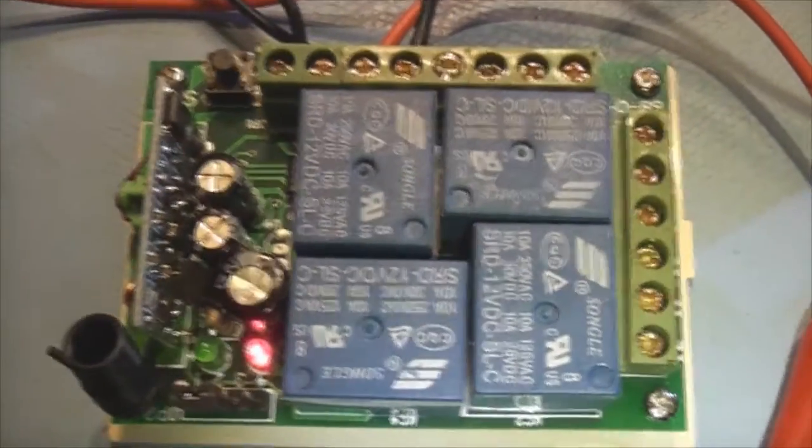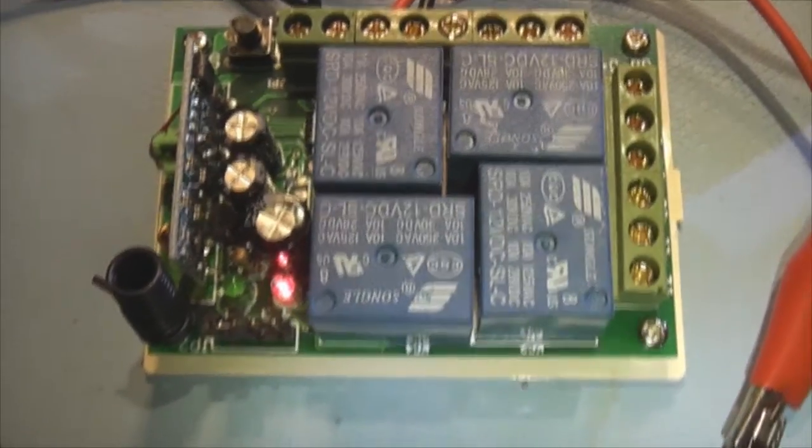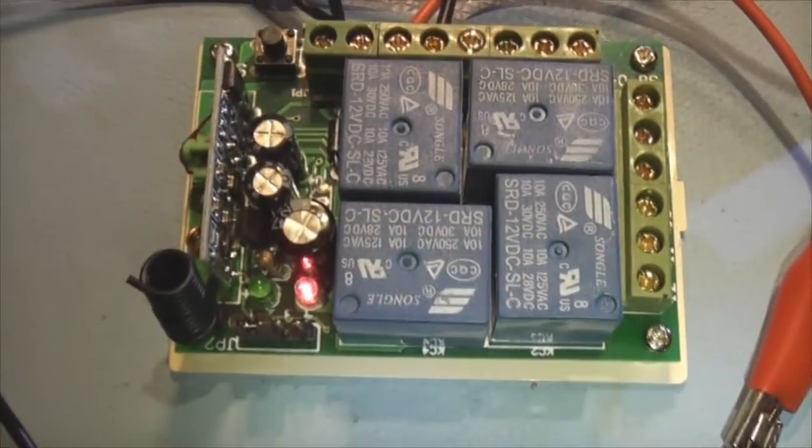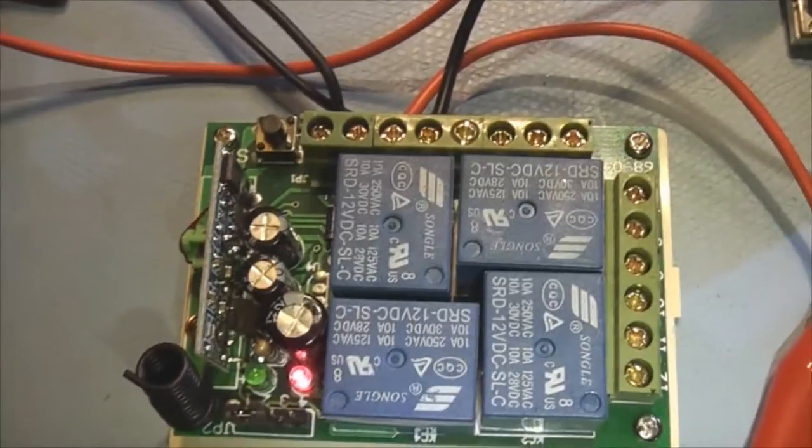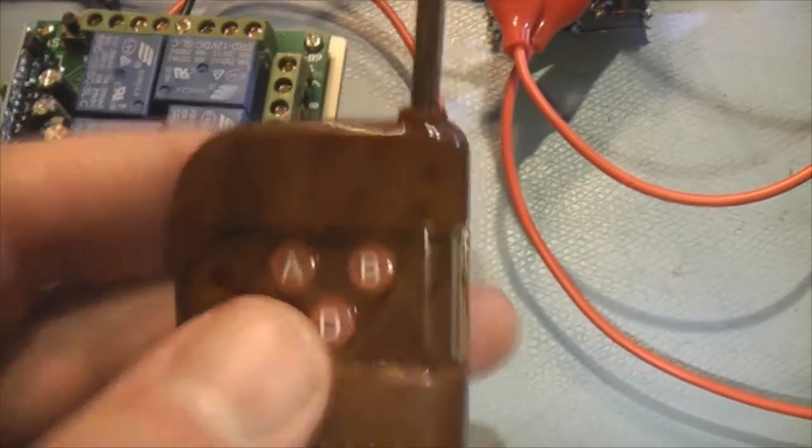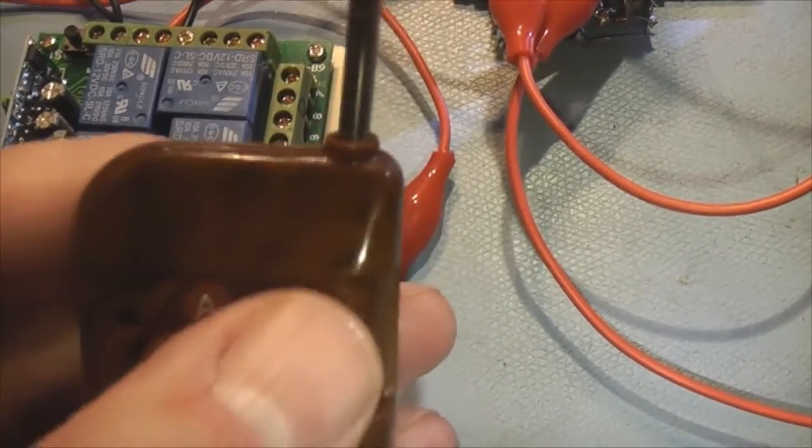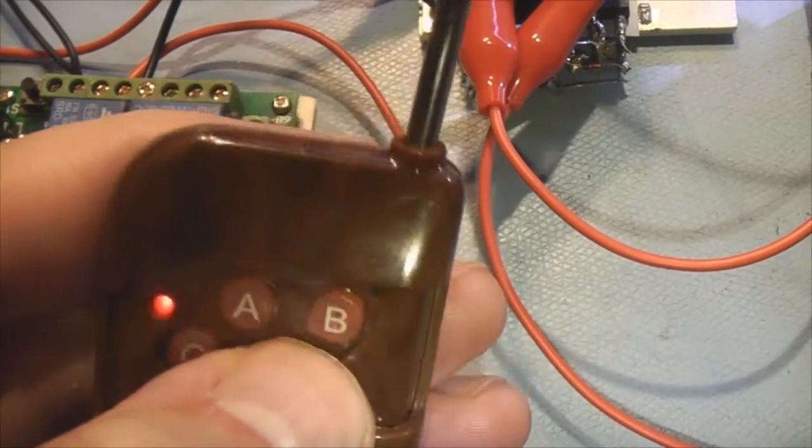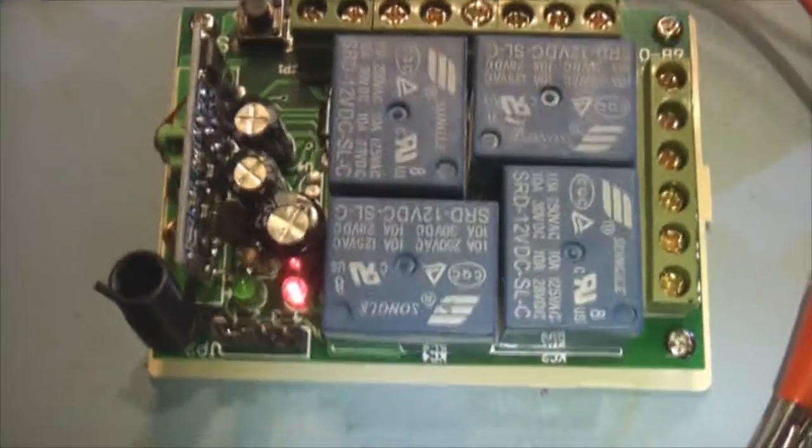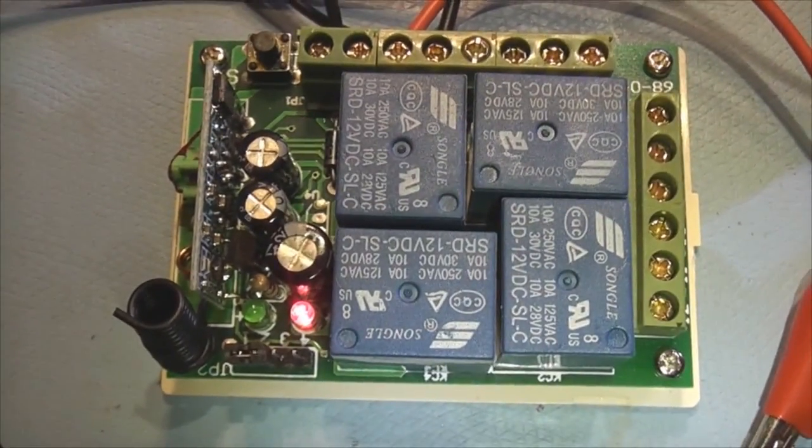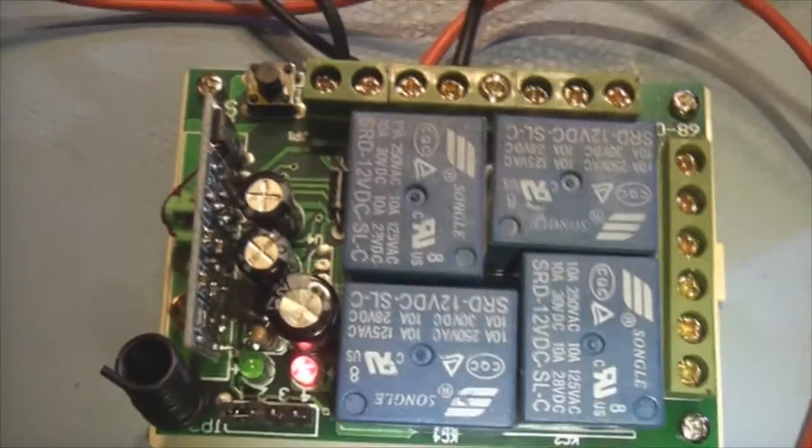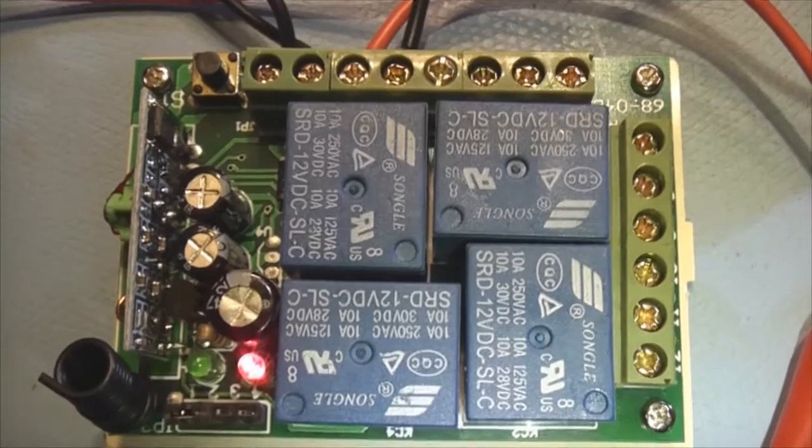Okay so now we get to the relay board. This is what I got off eBay. It's a four channel remote switch with a wireless transmitter. Comes with this little fella here. You can see the relay is clicking on it now. All controlled via that transmitter operating at 315 megahertz I believe. It's quite a good little unit.